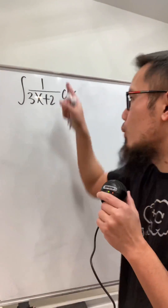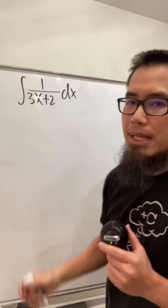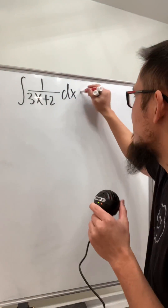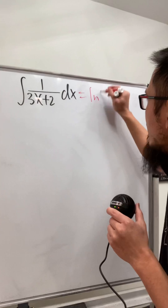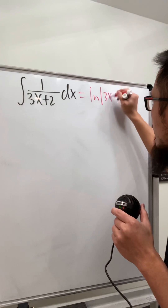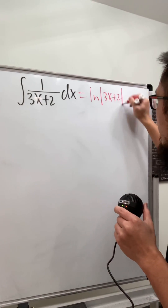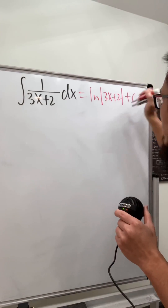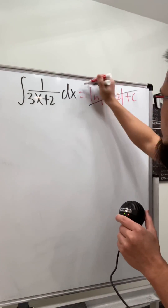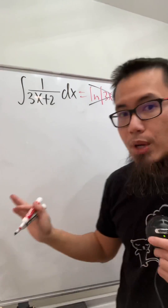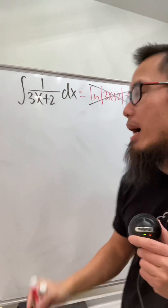I'm going to show you how to integrate 1 over 3x plus 2. A lot of people will tell you the answer is just equal to ln absolute value of 3x plus 2, and yes, remember the plus c — but no, this is not the correct answer. This is why.